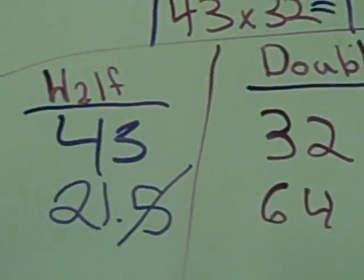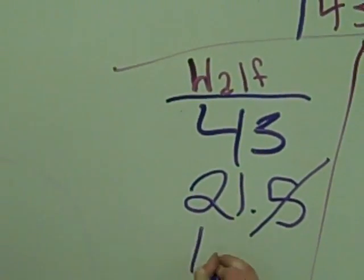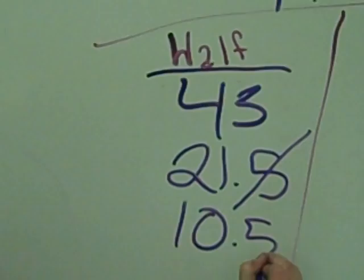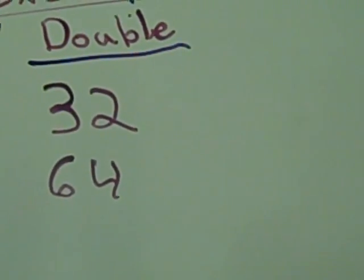Half of 21 is 10.5. We'd take out the .5. And 64 doubled is 128.